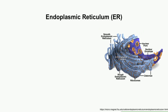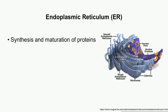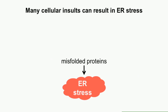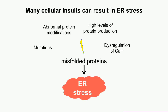The ER, endoplasmic reticulum, is a large organelle involved in the synthesis and maturation of proteins, protein folding and transport, the production of phospholipids, and it is the major calcium store in the cell. ER stress occurs when misfolded proteins accumulate in the lumen of the ER. This accumulation can happen for many reasons, including mutations, abnormal protein modifications, high levels of normal protein production, and the dysregulation of calcium in the ER.